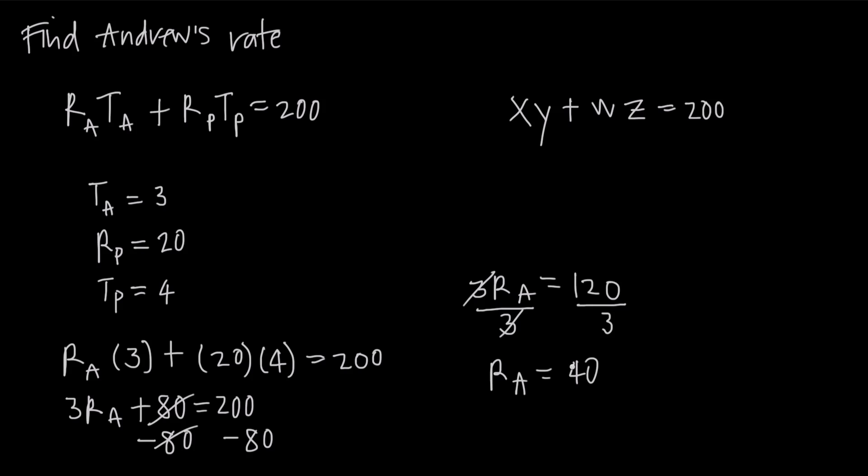Even though we're dealing with subscripts here, this is no different than being given this equation and being told that y equals 3, w equals 20, and z equals 4. We could have plugged in all three values and solved for x in the same way that we plugged in these values and solved for r sub a. Using subscripts instead of just variables can be a more descriptive way to describe information when you want to describe Andrew's rate, Peter's rate, Andrew's time, Peter's time. That's how you solve simple equations using subscripts.